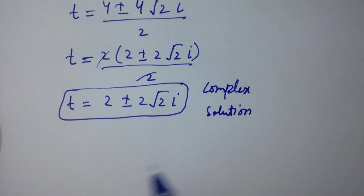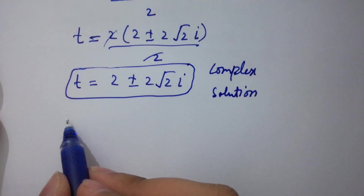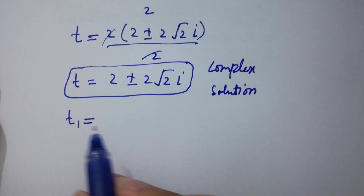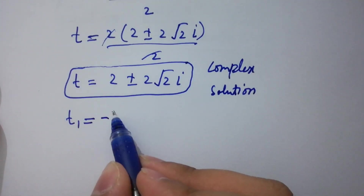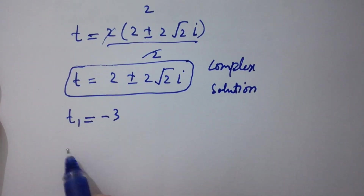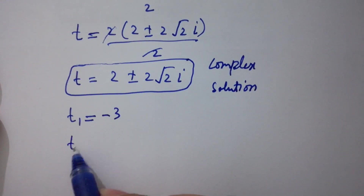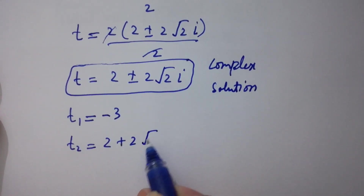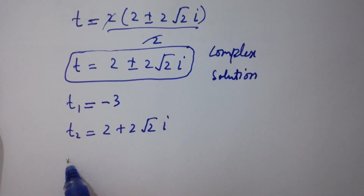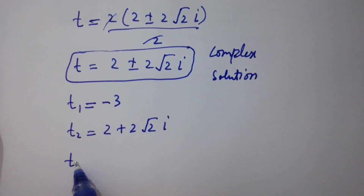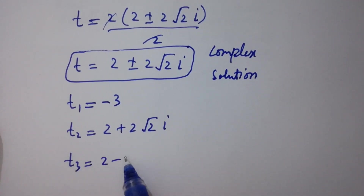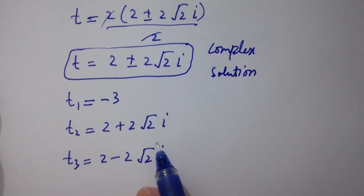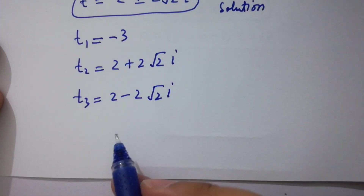So we have three solutions here: t1 equals minus 3, t2 equals 2 plus 2 square root of 2i, and t3 equals 2 minus 2 square root of 2i. In the next step I am going to verify.